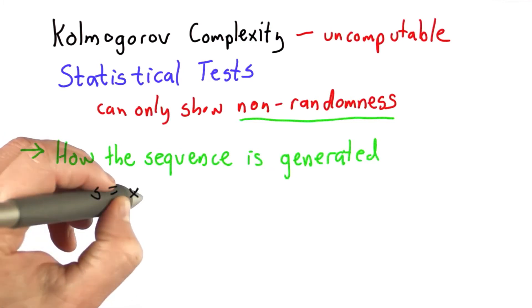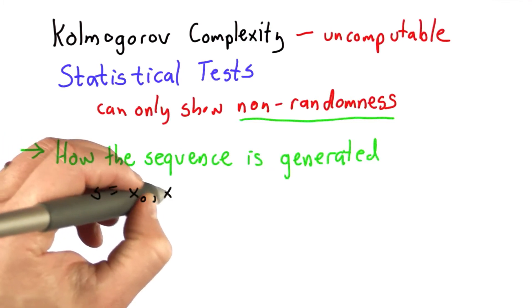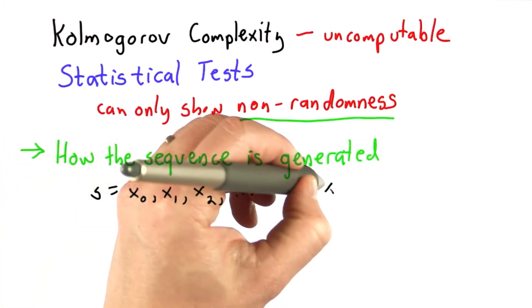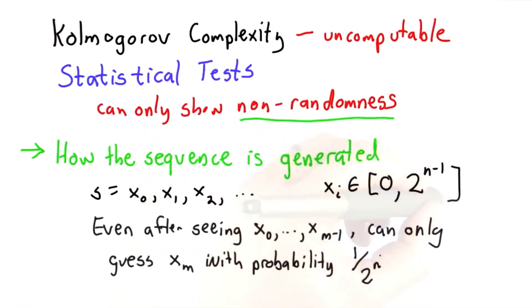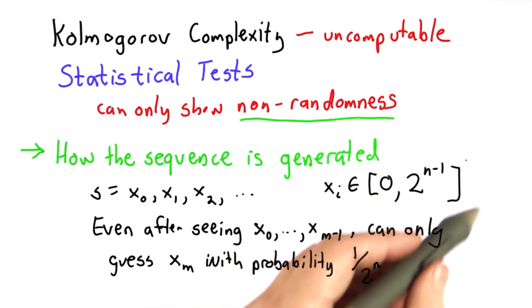We want to know if our sequence is a sequence of numbers where each xi is from the range 0 to 2 to the n-1, that even an attacker who's seen the first n numbers in the sequence can only guess the next one with the same probability they would have if they were just guessing by chance. Only 1 out of 2 to the n, the size of the elements in the sequence.